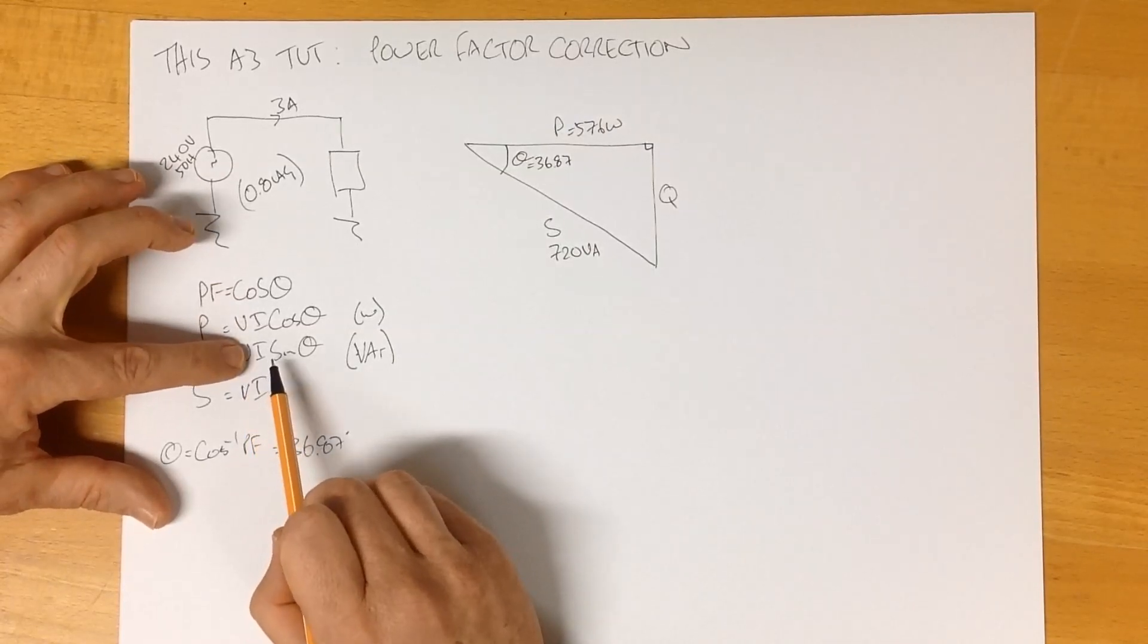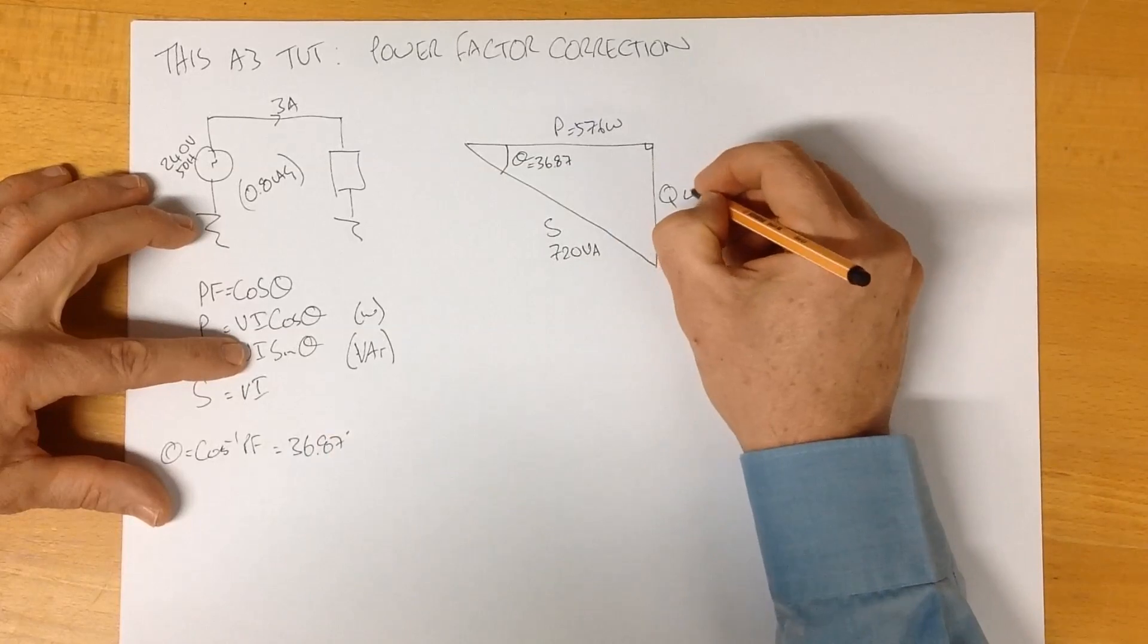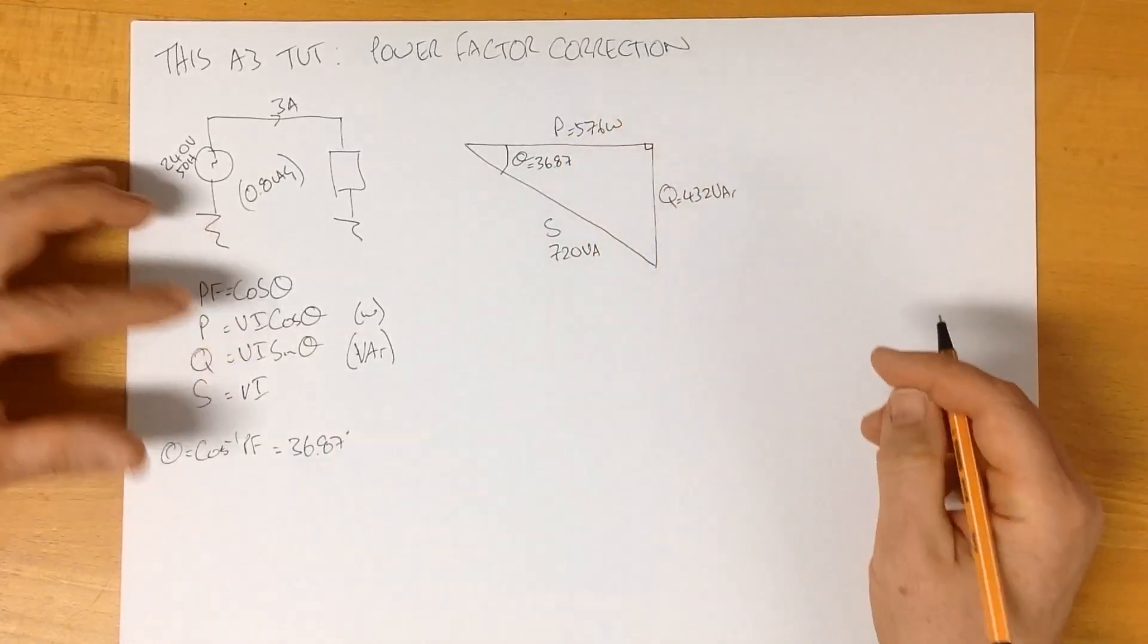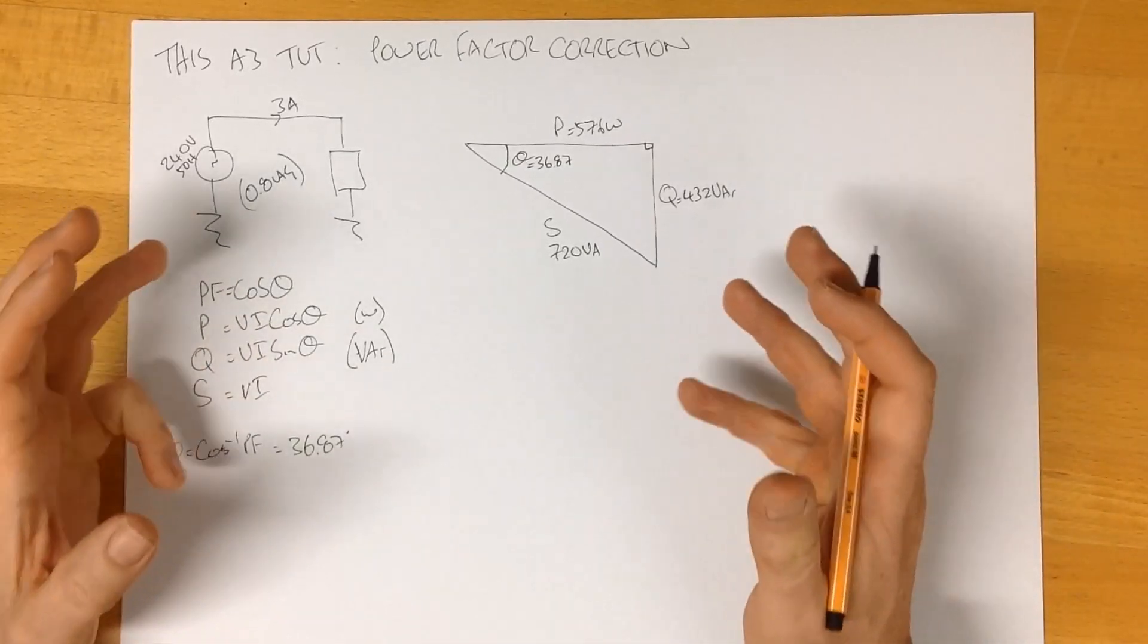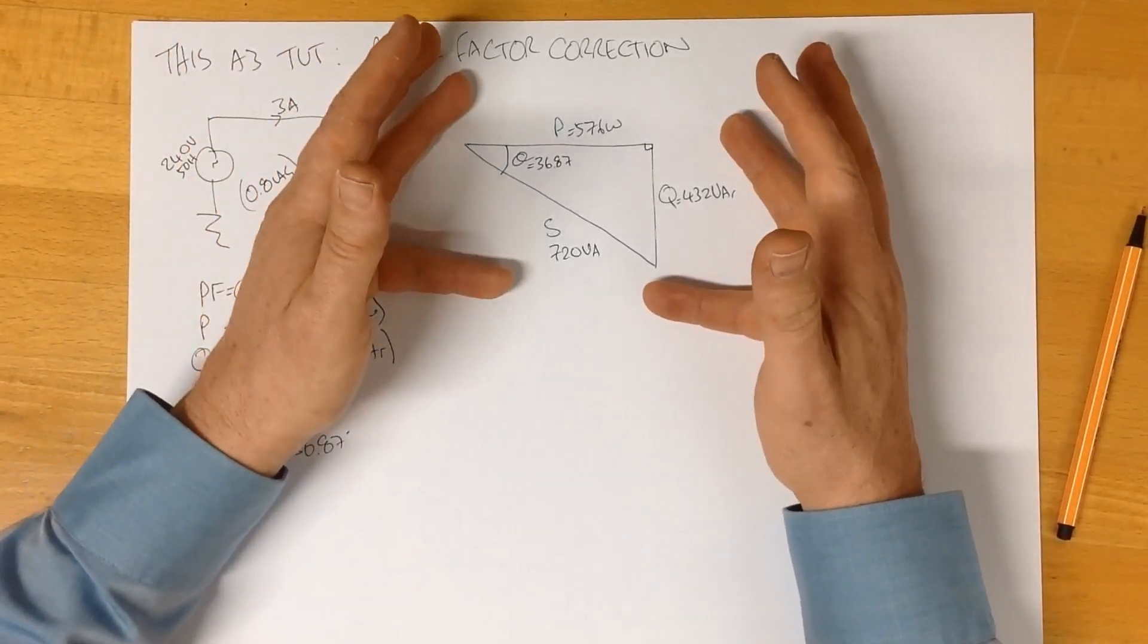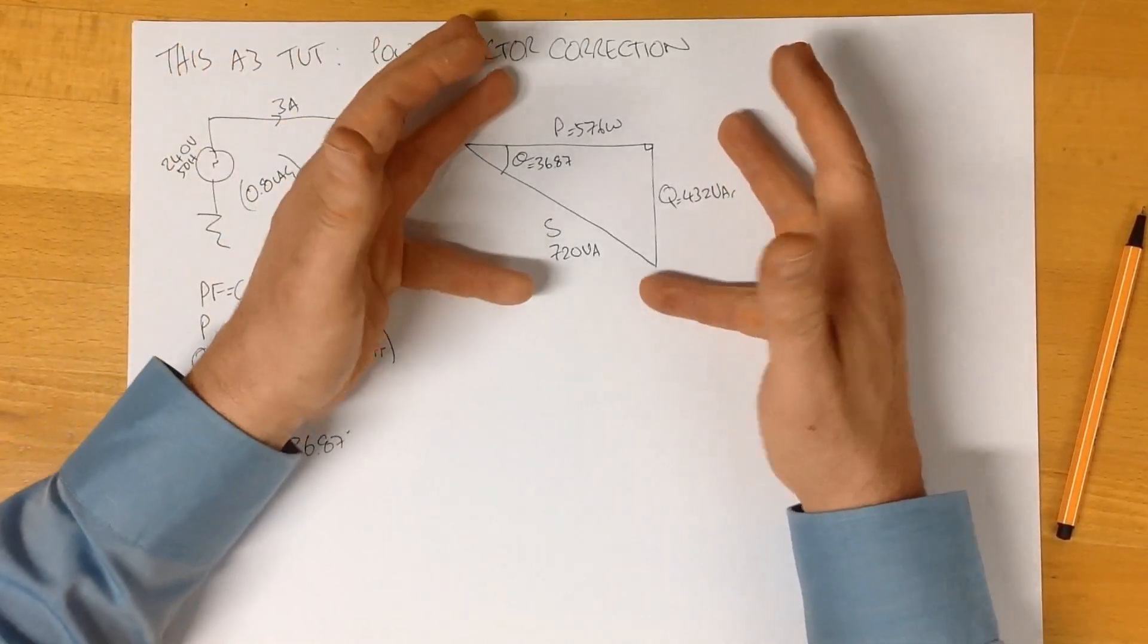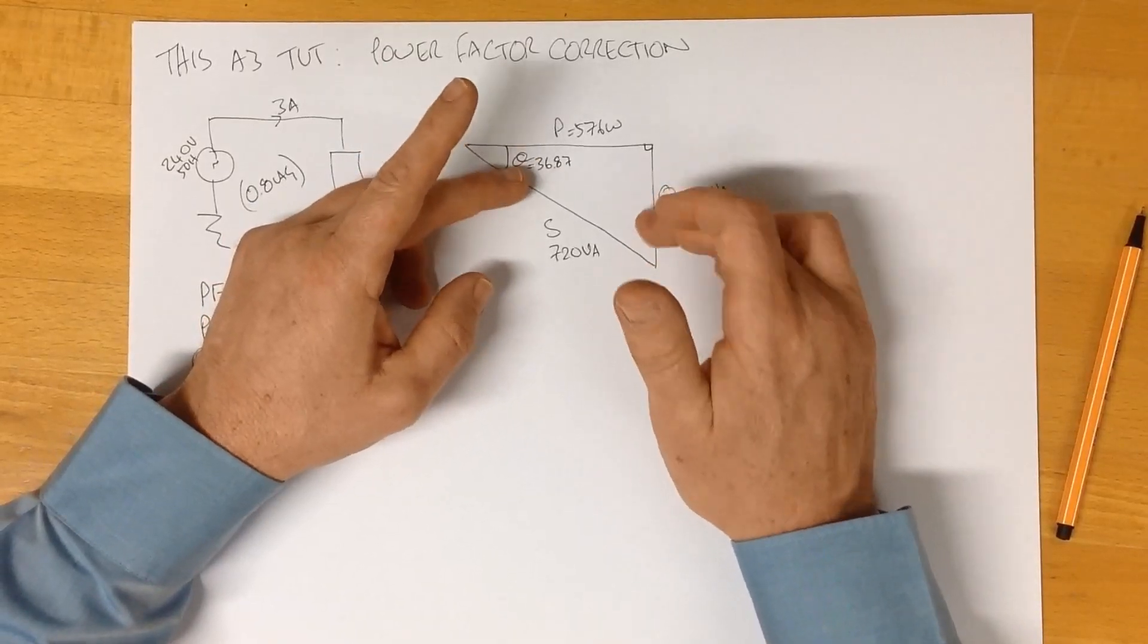240 times 3 times 0.8 will give us our real power, and that is 576 watts. Voltage times current times the sine of that angle will give us 432 VARs in this particular situation. In order to address a power factor problem, we must know what the situation is, and here we have it now. We've gone through, taken some basic values out of our schematic, and populated our power factor triangle. We can't do anything without that.